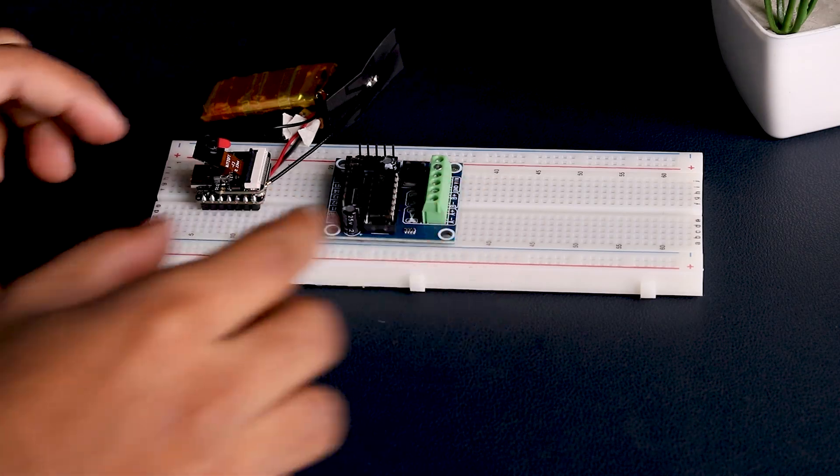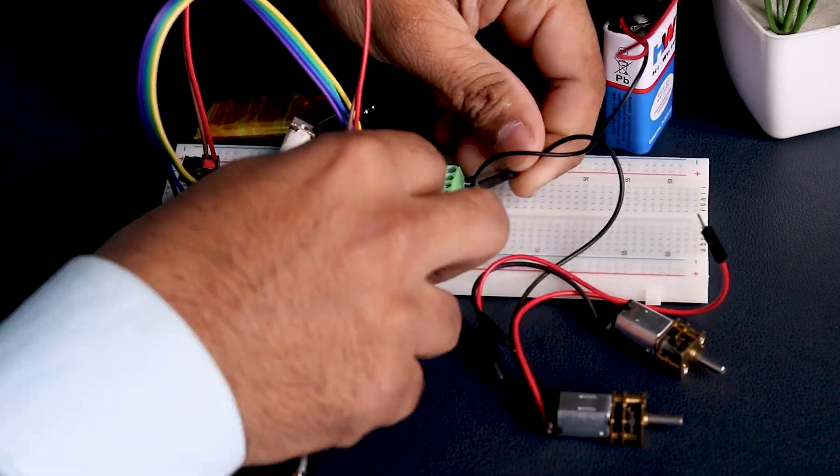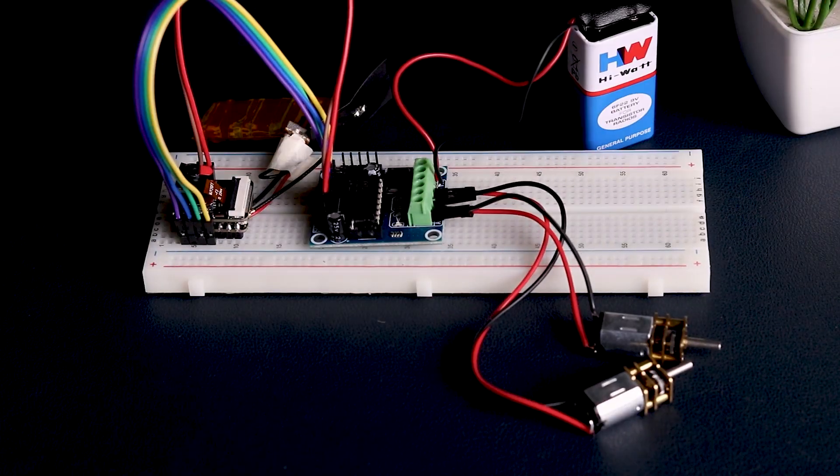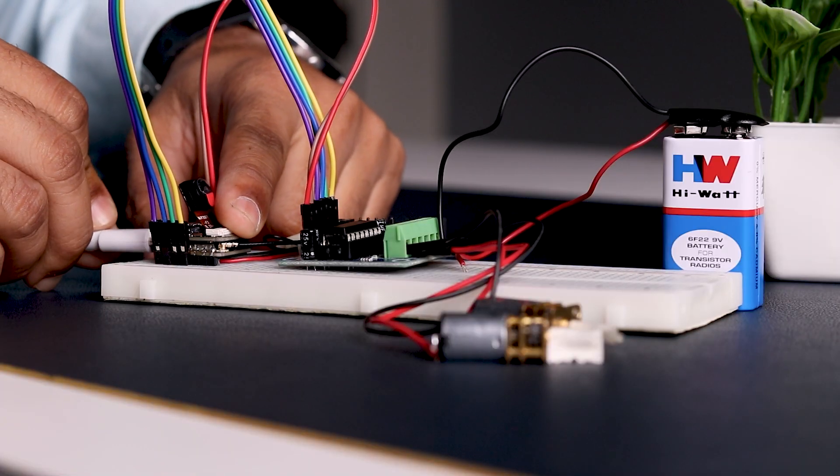We have connected the motors to the Sense board using the motor driver. Pins 1, 2, 3, 4 are connected to pins D0, D2, D3, D4 of the Sense board. Check out the blog for the circuit diagram. The circuit is assembled now.